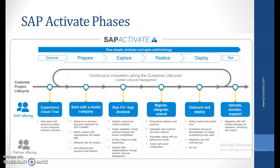Ready-to-run business processes are optimized for SAP S/4 HANA, and model company with organization and master data is delivered with the products. In the prepare phase, we have additional features beyond just the templates SAP provides — we also have guided configuration options to explore. In the explore phase, run fit-gap analysis is done, with solution scoping and content activation, simple adaptation of best practices toward self-service configuration, and fit-gap analysis instead of costly blueprinting. They also support delta implementations through content lifecycle management, where we don't have to start from scratch since suggestions can be carried forward for configuration.